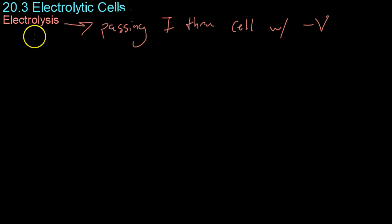Moving on now, we're going to be discussing electrolysis. Electrolysis consists of passing current, in this case represented by I, through a cell with a negative potential. And this causes a redox reaction to occur.